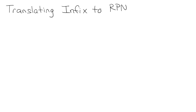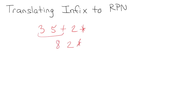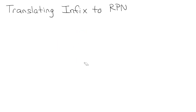In the other video we talked about performing operations with reverse Polish notation. The idea is: if you had 3 5 plus 2 times, that would be 3 plus 5 is 8, and then 8 times 2 is 16. So assuming you know what that is, we can go forward. If you haven't done that before, you need to review that before you can do infix to RPN.